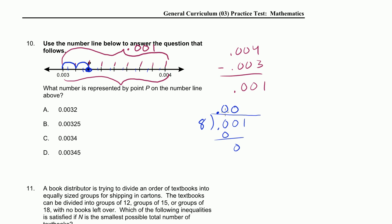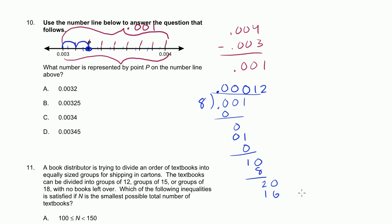8 goes into 0 zero times, bring down a 0. Bring down a 1 — 8 goes into 1 zero times. Bring down another 0. 8 goes into 10 one time; 1 times 8 is 8. 10 minus 8 is 2, bring down a 0. 8 goes into 20 two times; 2 times 8 is 16. 20 minus 16 is 4, bring down another 0. 8 goes into 40 five times. So it's 0.000125.